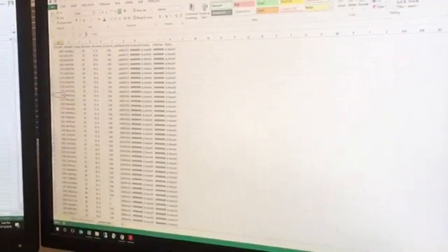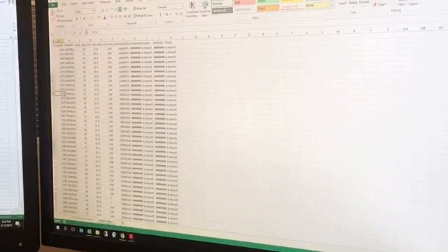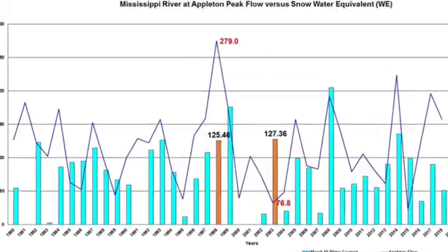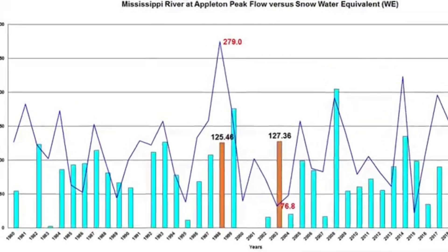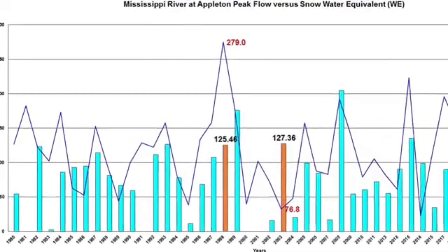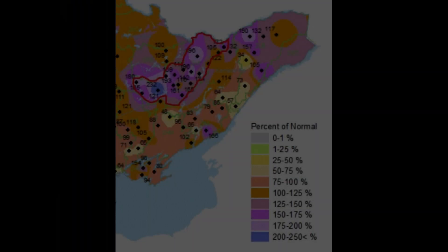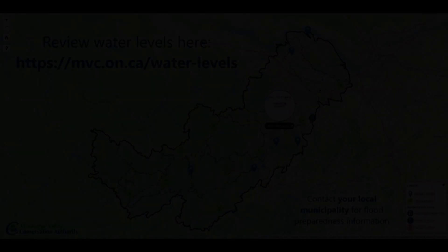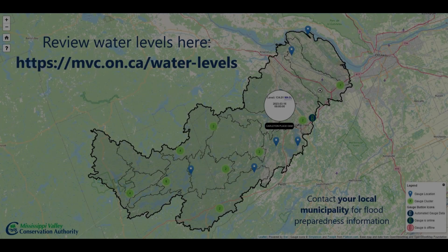We enter the snow water content and snow depth into our cell phones and then upload the data back at the office. The flood forecasting and warning department uses this information to determine what kind of snowpack is out there and how much water is in it, so when it does melt we can plan for the response.